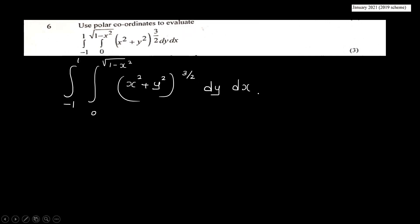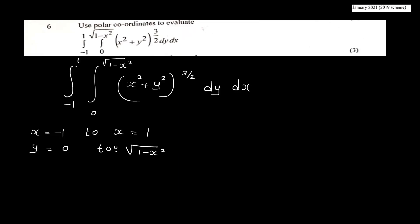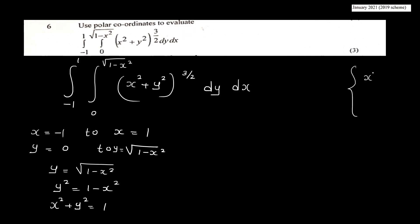The limits are: x from minus 1 to 1, and y from 0 to root of 1 minus x squared. Now, y equals root of 1 minus x squared means y squared equals 1 minus x squared, which gives x squared plus y squared equals 1. So the region of integration is the upper semicircle of radius 1.